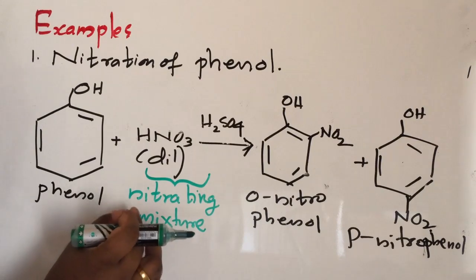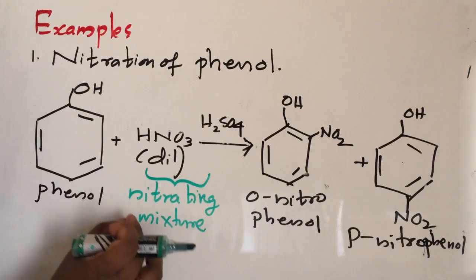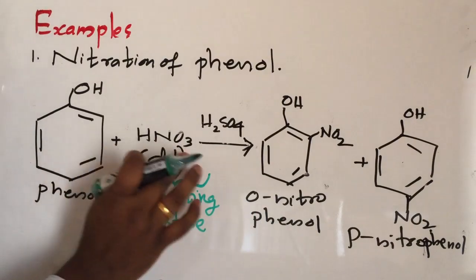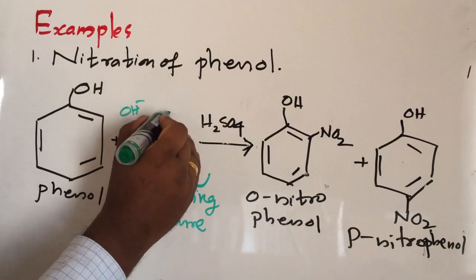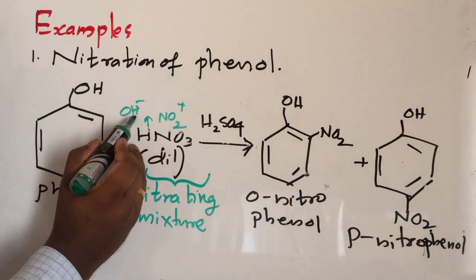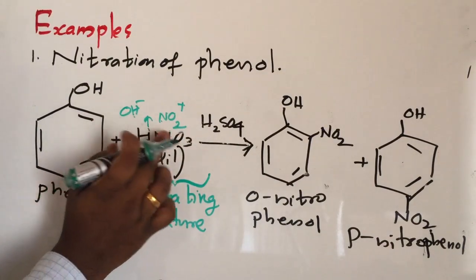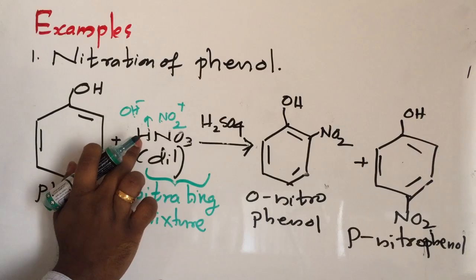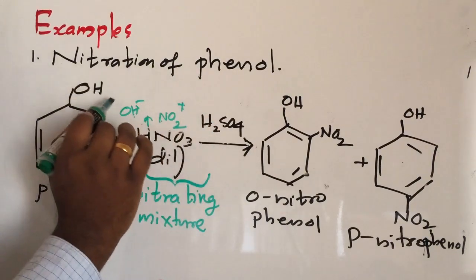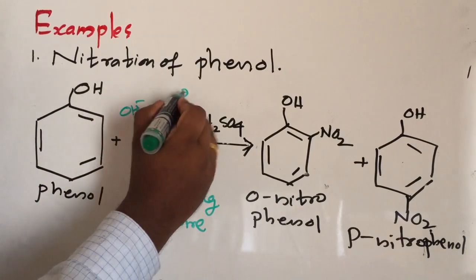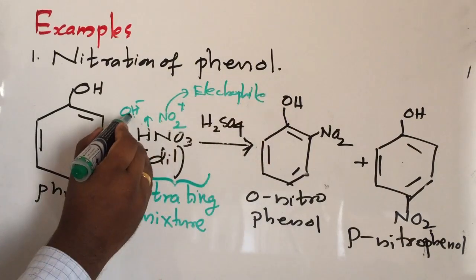Now I will show you a simple trick to make the product — not the actual mechanism, just a simple trick. HNO3 we can write like this: OH and NO2+. Out of these, which one is the electrophile? The one that loves electrons. YES — NO2+ has a positive charge, so NO2+ is the electrophile.